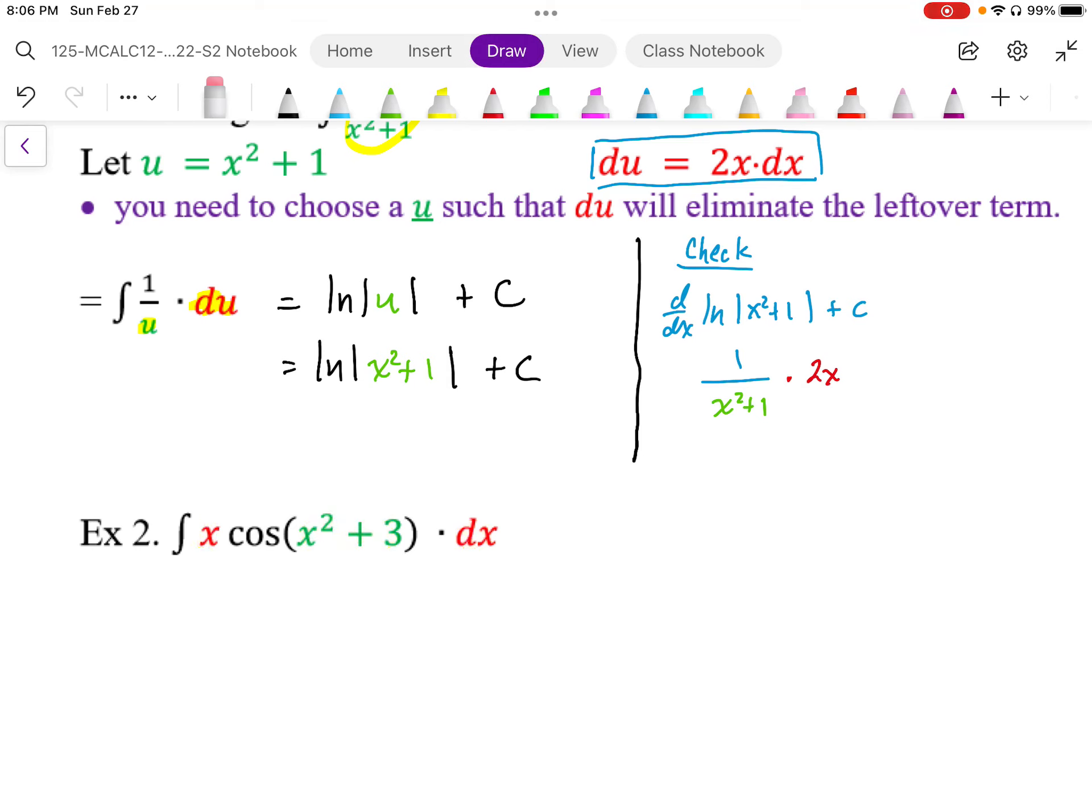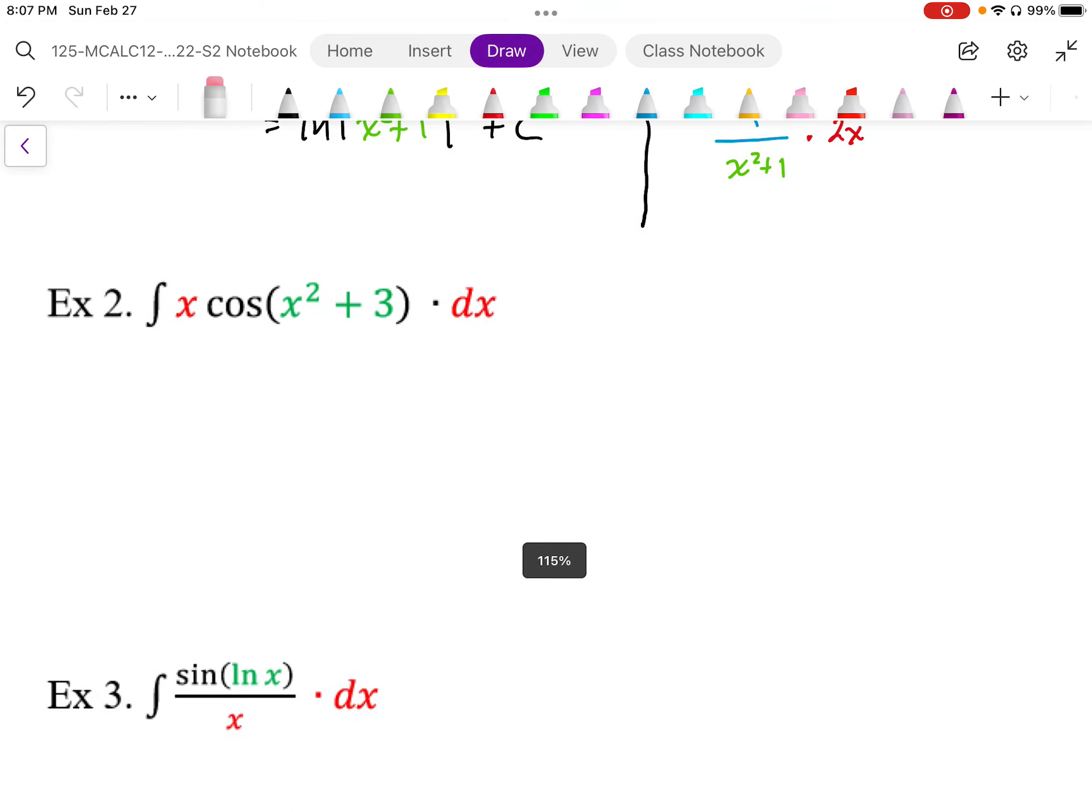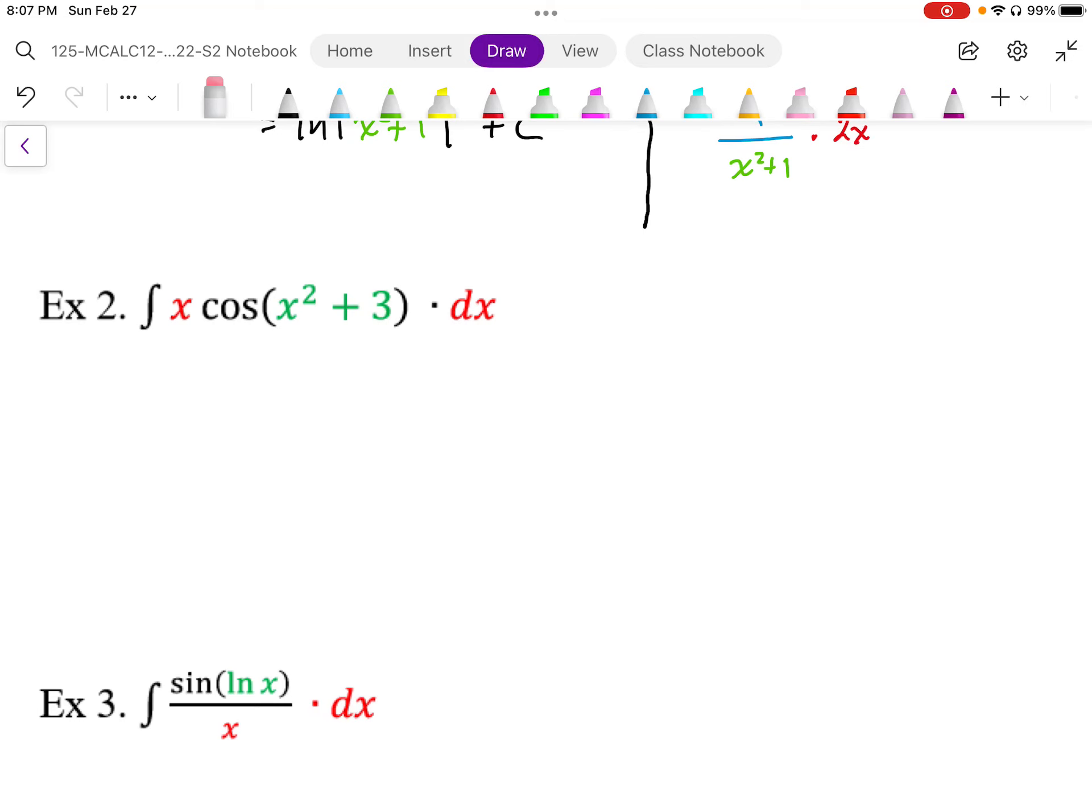Where we often look is inside first. In this example, we have x cos(x² + 3). We're going to look inside and try letting the u function be that inside function. So let u = x² + 3.